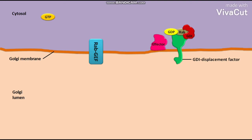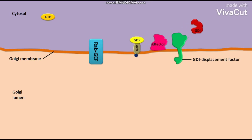This nonspecific GDI displacement factor removes the inactive Rab-GDP from the GDI and inserts it into the membrane. The removal of inactive Rab-GDP from the GDI frees the GDI.